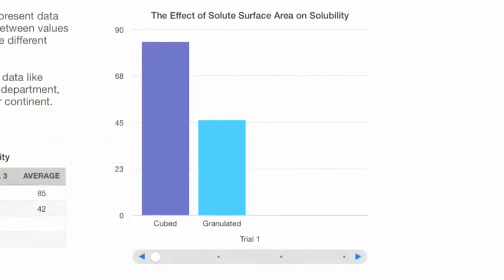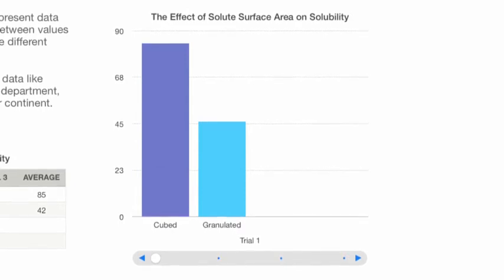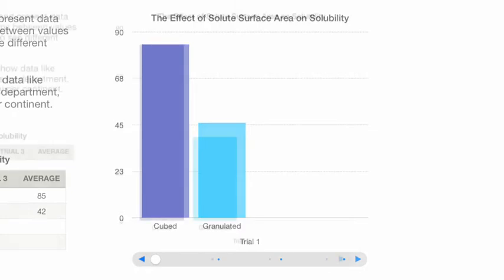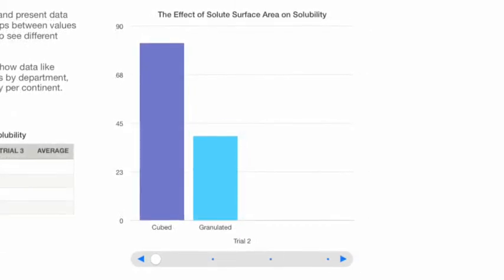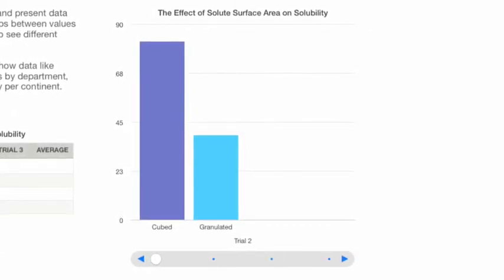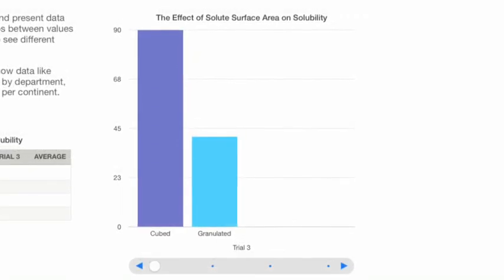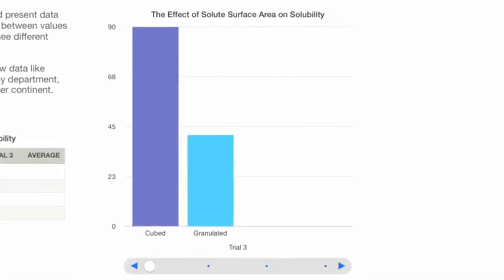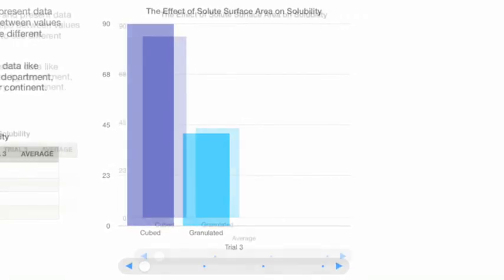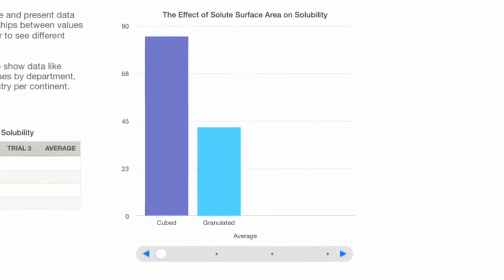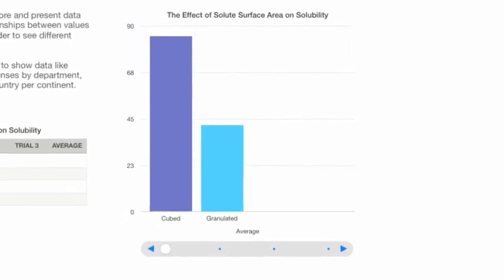This graph shows the data for trial 1. In this graph and the following, the x-axis represents the form of sugar and the y-axis represents dissolving time in seconds. This is the data for trial 2. This is the graph for trial 3. This graph shows the average of all the data we collected.